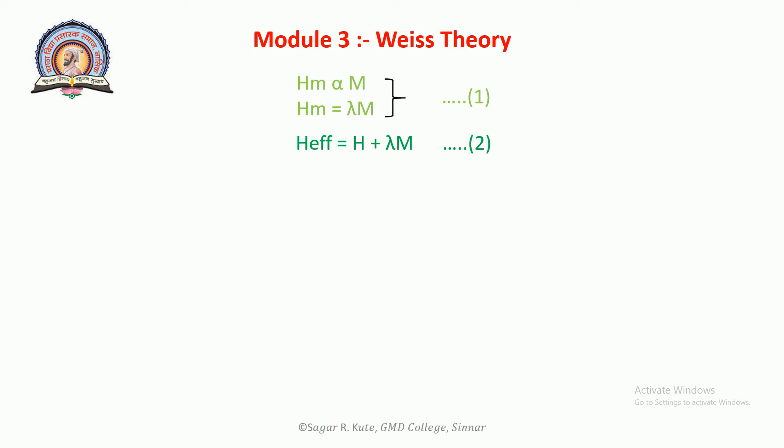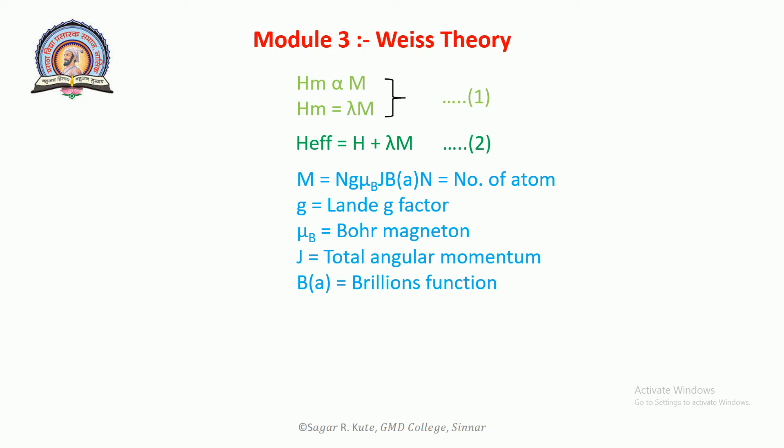Let us consider a ferromagnetic solid containing N number of atoms per unit volume. J is the total angular momentum quantum number of each atom. The total magnetic moment of this atom in field H is given by: M equals N g mu_B J times B(a), where N is the number of atoms, g is the Landé g factor, mu_B is the Bohr magneton, J is total angular momentum, and B(a) is the Brillouin function.